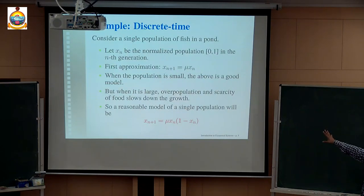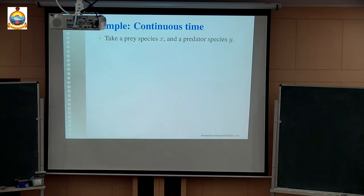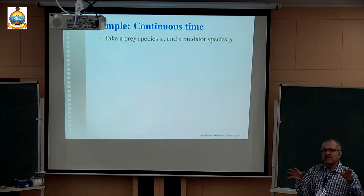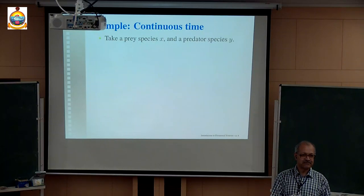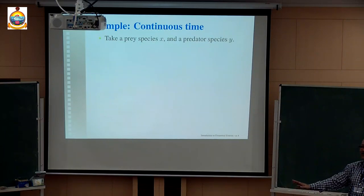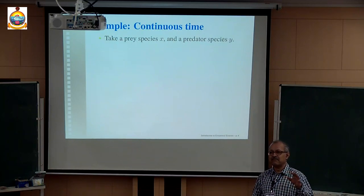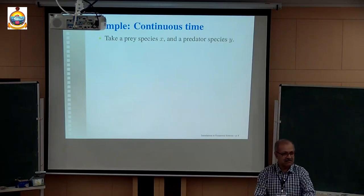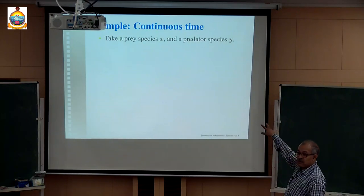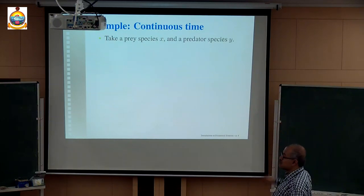You see, there was no great rocket science involved — it was just a common-sense way of formulating a model. Now let us consider a continuous-time dynamical system. When the number of individuals in a species is reasonably large, it can be approximated by a continuous variable. Suppose there are two species in a forest: tiger and deer. The tigers eat the deer, and the deer survive by avoiding predators and eating grass. So x represents the number of the prey species and y represents the number of the predator species.